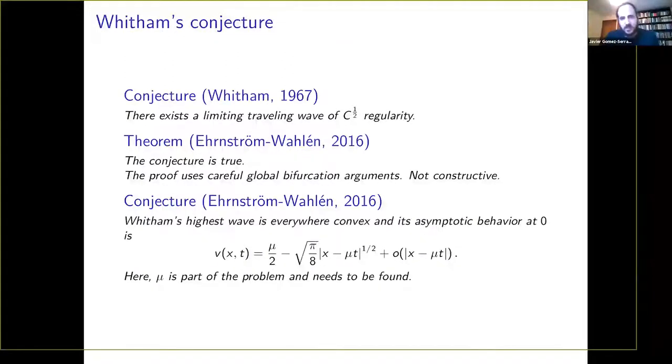So Whitham in 1967 had the following conjecture. Whitham, using formal arguments, conjectured that there was a limiting traveling wave and moreover, that limiting traveling wave had C^{1/2} regularity. So now 50 years later, Ehrnström and Wahlén proved the conjecture using global bifurcation theory. The proof gives existence but it's not constructive. So in the same paper, they conjectured that the limiting wave was everywhere convex between crest and trough, and moreover, the asymptotic behavior was given in the moving frame by this x to the one half term, which was the one conjectured by Whitham, but the next term had to be little o of x.